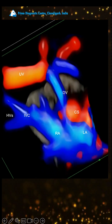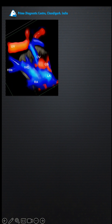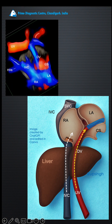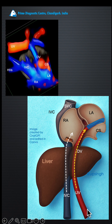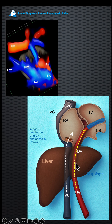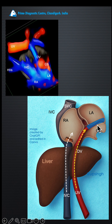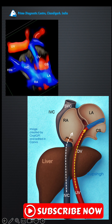Our final diagnosis was that the inferior vena cava drains normally into the right atrium, but the umbilical vein does not drain into the inferior vena cava — instead it goes and drains through the DV into a dilated coronary sinus. This is the rare anomaly that explained the unexplained coronary sinus dilatation.